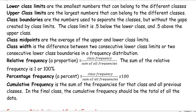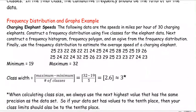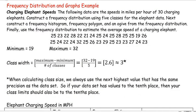I'm going to do an example today about the speed of charging elephants, and I'm going to be talking about all this vocabulary, which we did mention in the last video. So here's our problem: frequency distribution and graphs example of charging elephant speeds. The following data are the speeds in miles per hour of 30 charging elephants. Construct a frequency distribution using five classes for the elephant data.